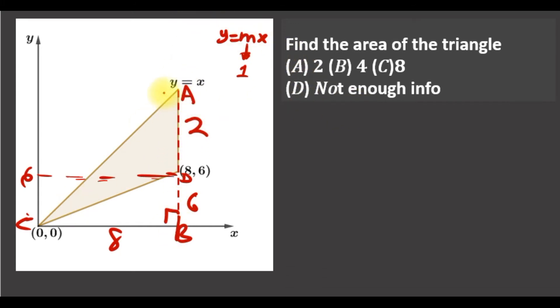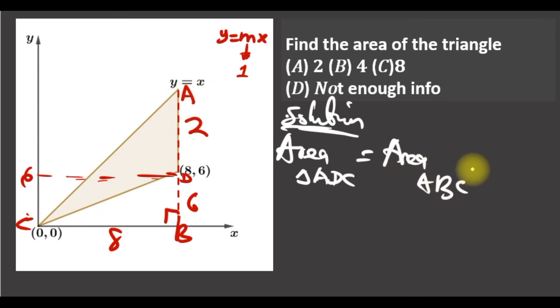We see that the area of this triangle ADC is equal to area of triangle ADC, which is now area of the bigger triangle ABC minus area of this smaller triangle DBC.